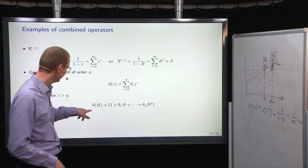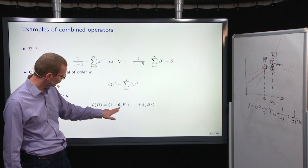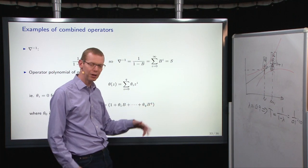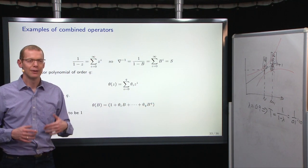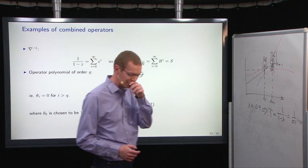So we can define theta B here. Theta B as 1 plus theta_1 B plus so forth down to theta_q and B to the q power. So to only have powers up to a certain, have elements up to a certain power of B.